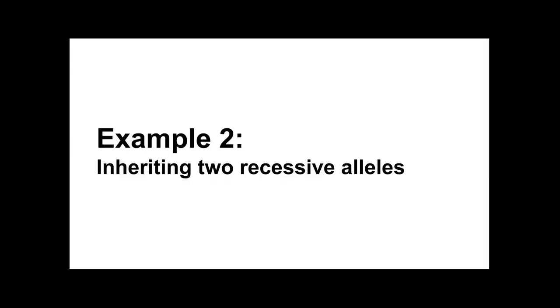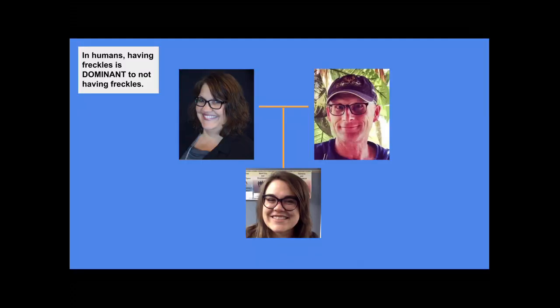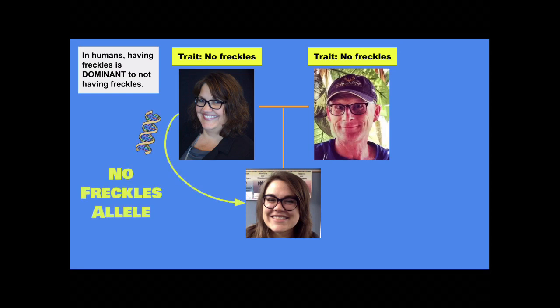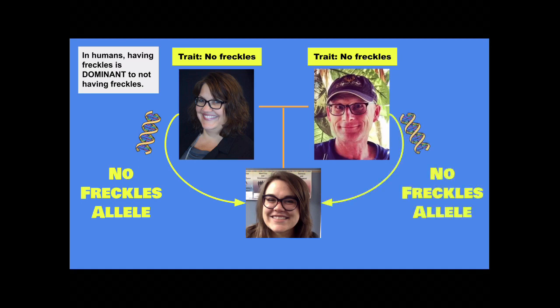Now let's look at an example where I inherit two recessive alleles — having freckles. In humans, having freckles is dominant to not having freckles. If you look at my mom, she doesn't have any freckles, and my dad doesn't have any freckles either. So my mom passes me the no-freckles allele in her egg, and my dad passes me the no-freckles allele in his sperm. Obviously, I don't have freckles — I didn't get the freckles allele from either parent. Seems pretty simple.